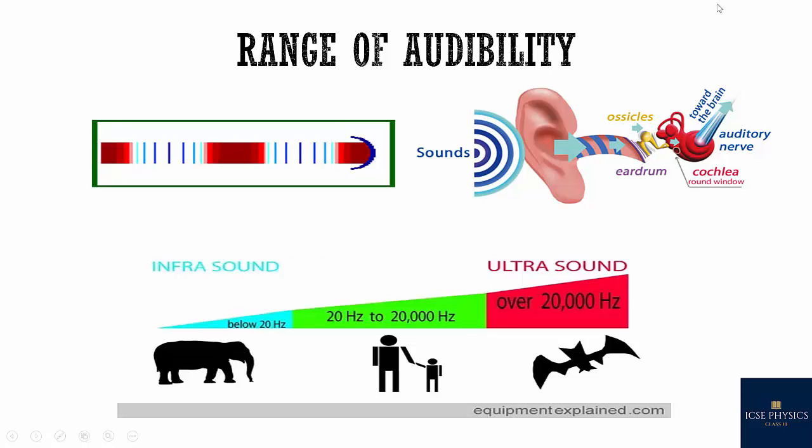So what is range of audibility? Range of audibility for human ears is 20 hertz to 20,000 hertz. The frequency range below 20 hertz is known as infrasound which elephants can hear. The frequency above 20,000 hertz is known as ultrasound which bats can hear.